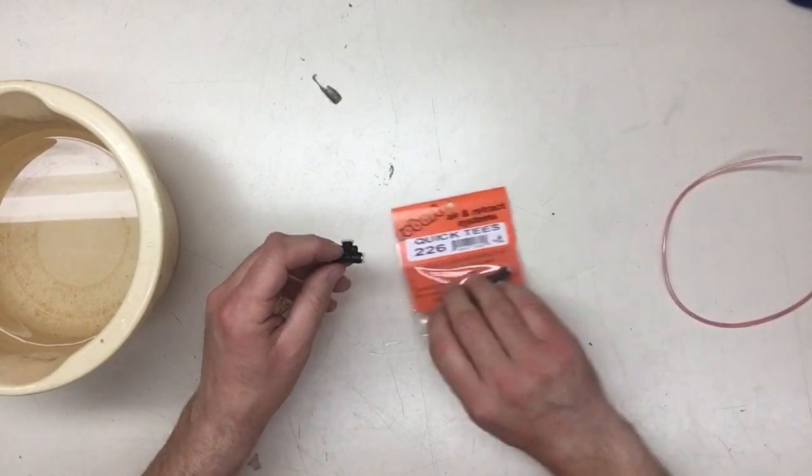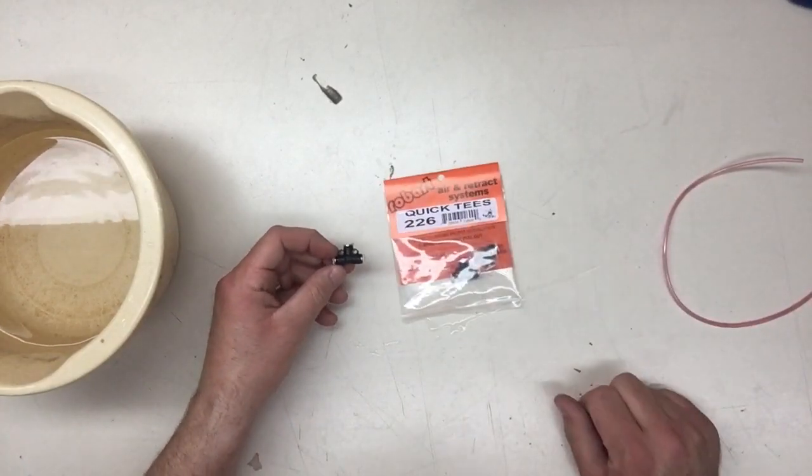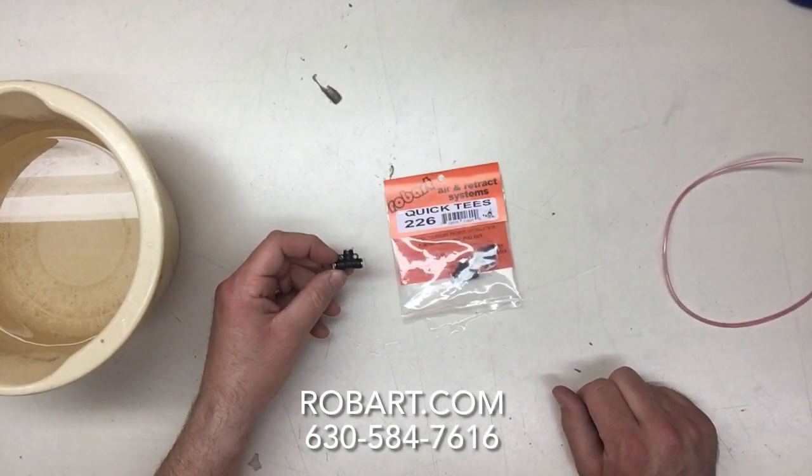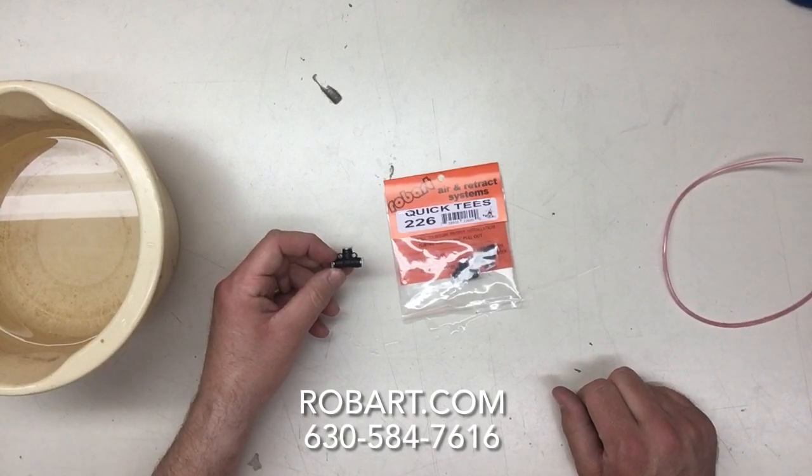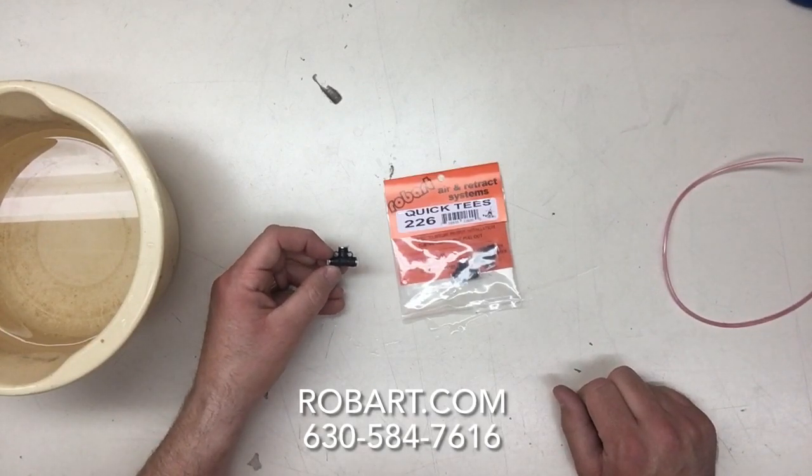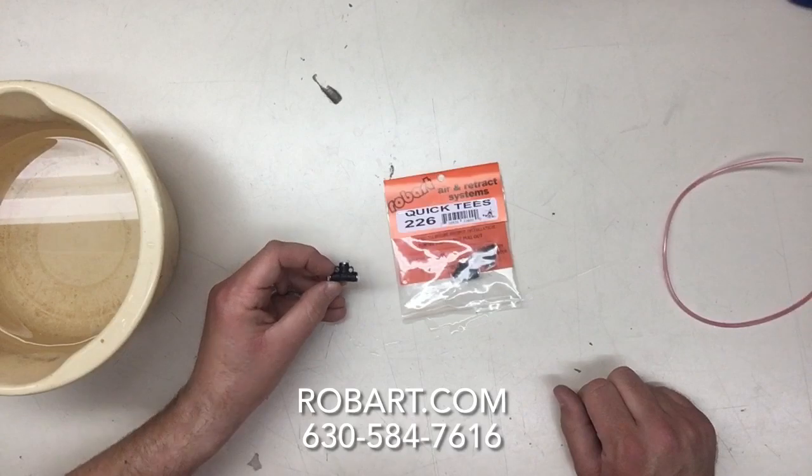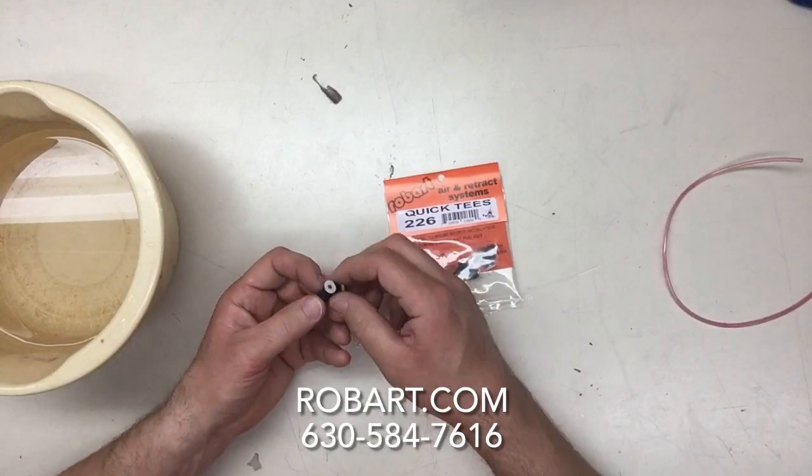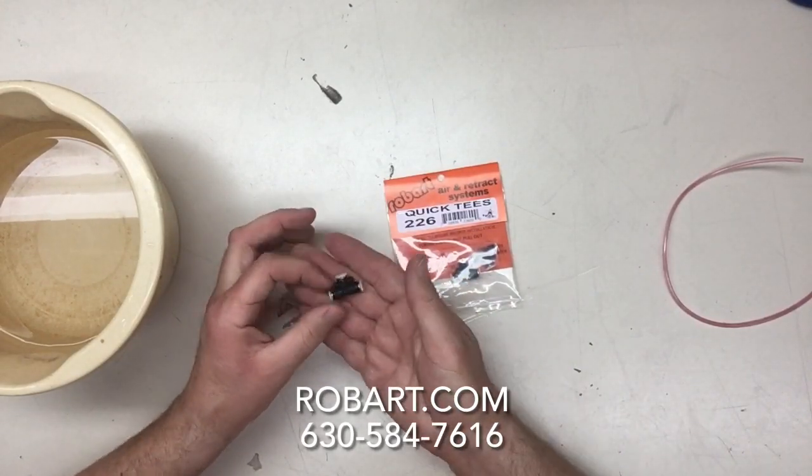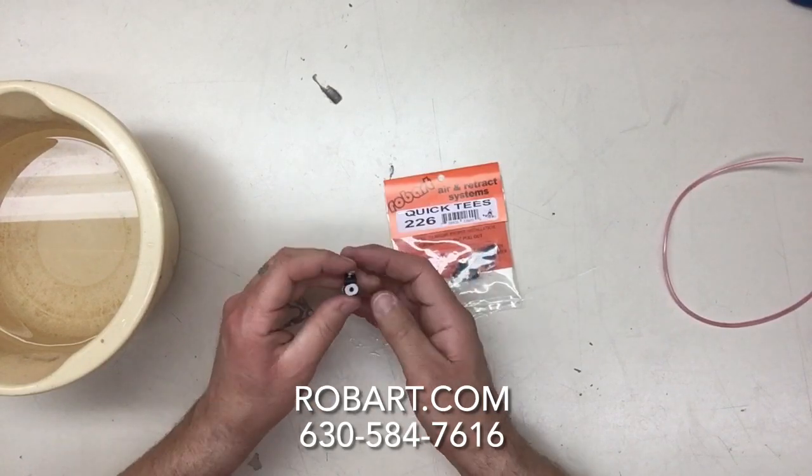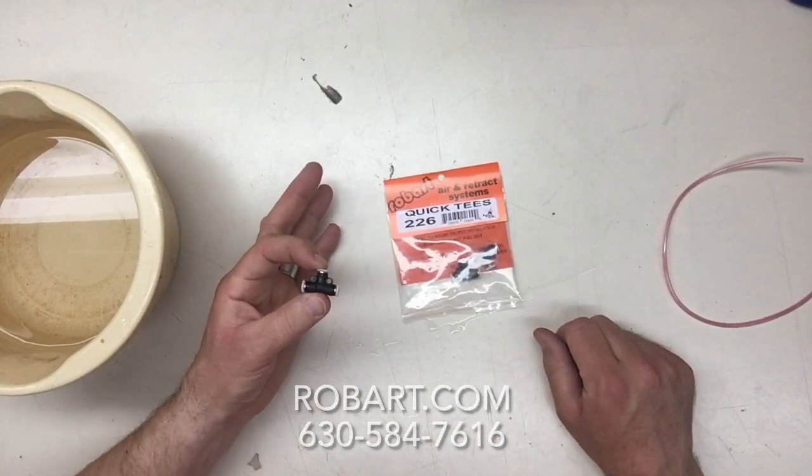So, once again, this is part number 226. The quick tees from Robart. If you've got any questions, give us a call. 630-584-7616. Check us out online at www.robart.com. Or follow us on Facebook, YouTube, Instagram, and Pinterest. Thank you so much. Have a wonderful day.